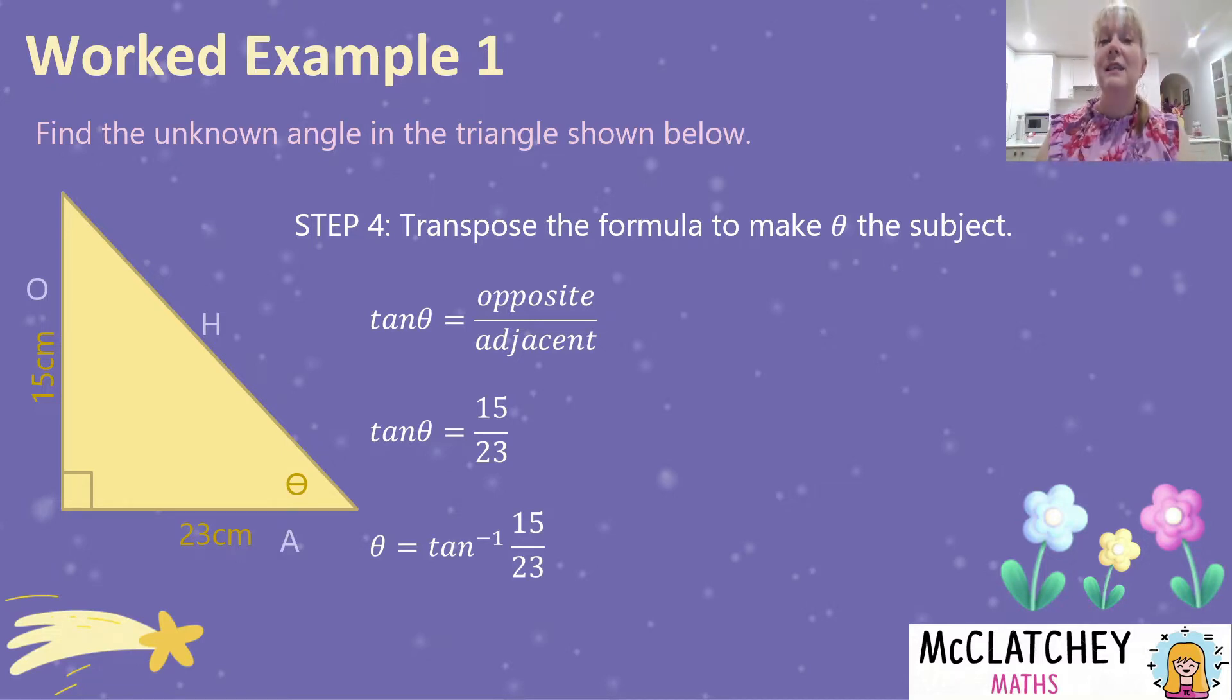An inverse function is the opposite of the normal function. So the inverse of tan is the opposite of tan, the inverse of cosine and sine is the opposite of sine and cosine. So our calculator thinks about what angle is needed to produce a tangent equal to 15 over 23. This is all loaded into your calculator already. Let's have a look at it there now.